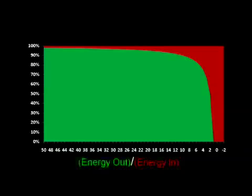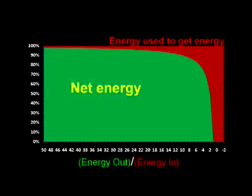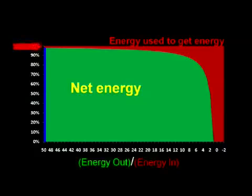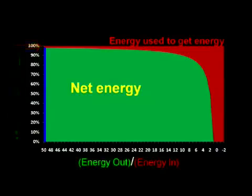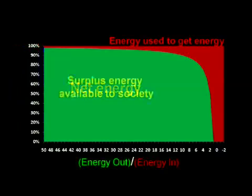Now let's make this visual by graphically comparing the relationship between energy out and energy in. The red part is the amount of energy we have to put in, and the green part is how much we got out, or the net energy, displayed such that they sum to 100%. In this first scenario, the energy out divided by energy in yields a value of 50, meaning that 1 unit of energy was used to find and produce 50 units. In other words, 2% was used to find and produce energy, leaving us a net 98% to use however we see fit. We could also call this part the surplus energy available to society.